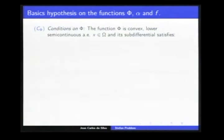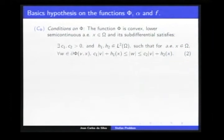The condition on alpha is that it must be convex, lower semi-continuous, and the graph of its derivative must be between two cones.